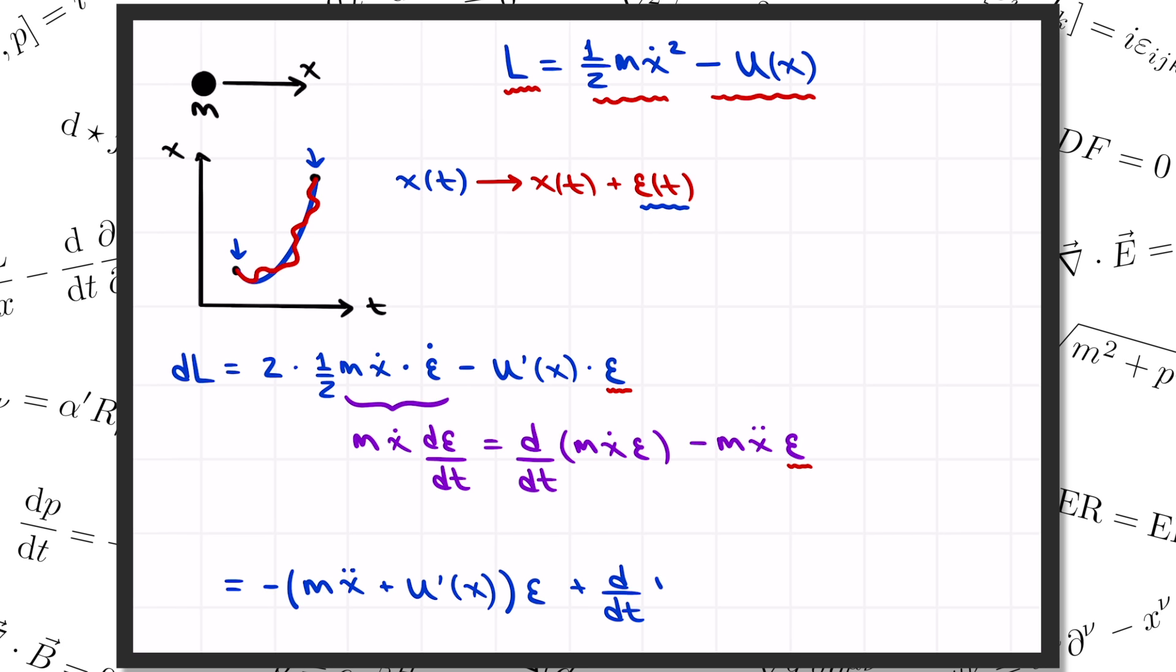Now, when we integrate this to get the change in the action, the second term isn't going to contribute anything, because we assumed that epsilon vanished at the initial and final times. Then, the fact that the integral of the first term is supposed to vanish for any epsilon of t, means that the thing multiplying it in the integrand has got to be zero. That's what gives us the equation of motion. m x double dot equals minus u prime of x. And we recognize that as the f equals ma equation for a particle in a potential u, because minus u prime of x is the force. So, that's how we derive the equation of motion from the principle of least action.